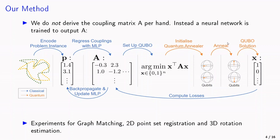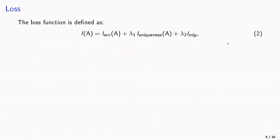So we tested our method for graph matching, 2D point set registration and 3D rotation estimation. The loss that we used consists of three parts: the accuracy loss, the uniqueness loss, and the MLP loss.